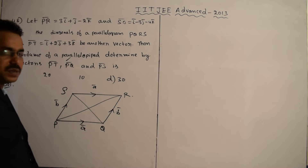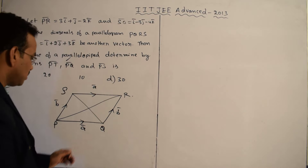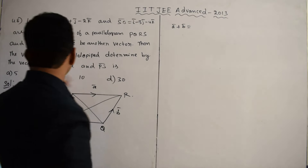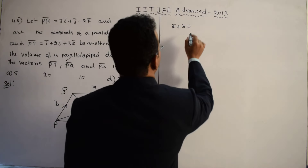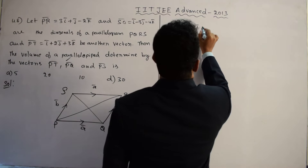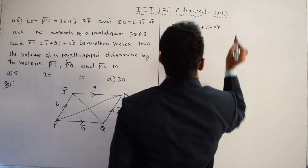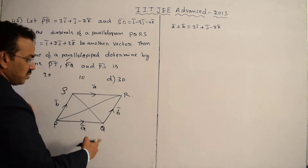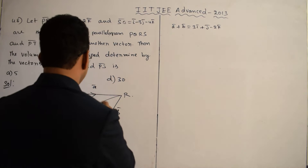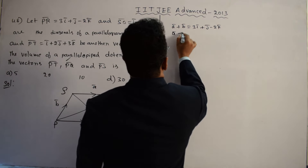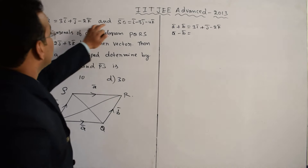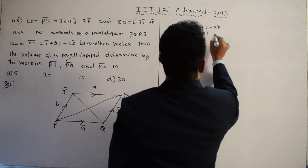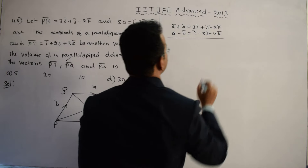From the diagram, we can write PR̄ = Ā + B̄. So Ā + B̄ = 3Ī + J̄ - 2K̄. The other diagonal SQ̄ goes from S in the direction A̅ - B̅, so Ā - B̄ = Ī - 3J̄ - 4K̄. Now we have two vector equations to solve for Ā and B̄.